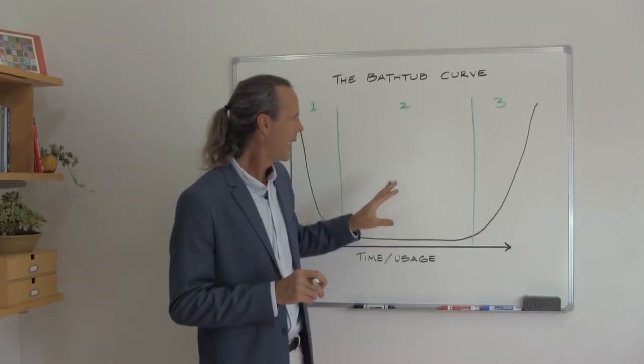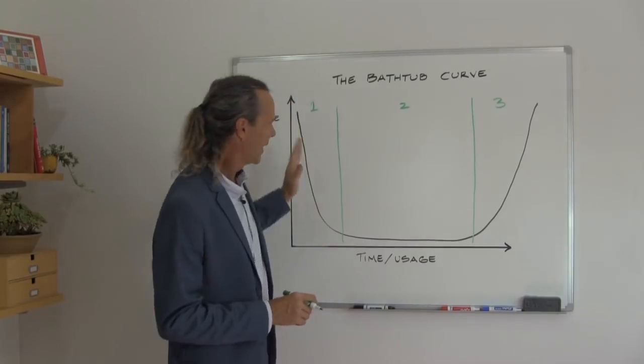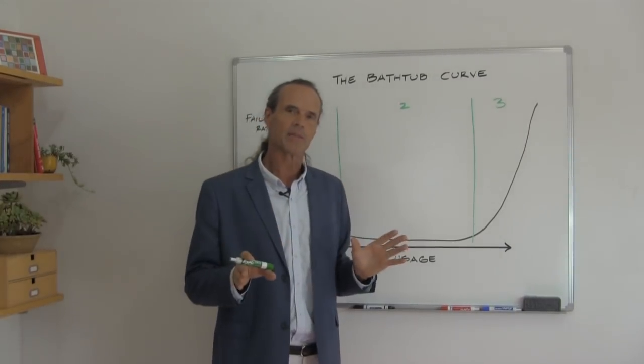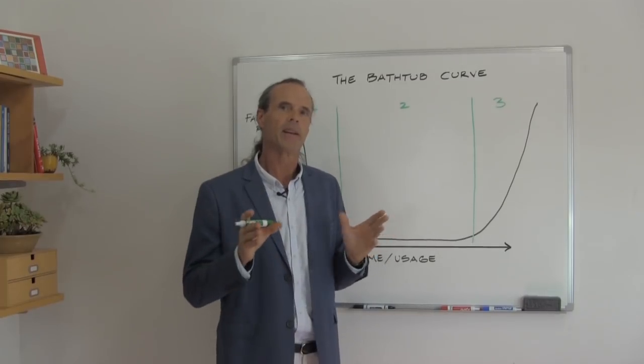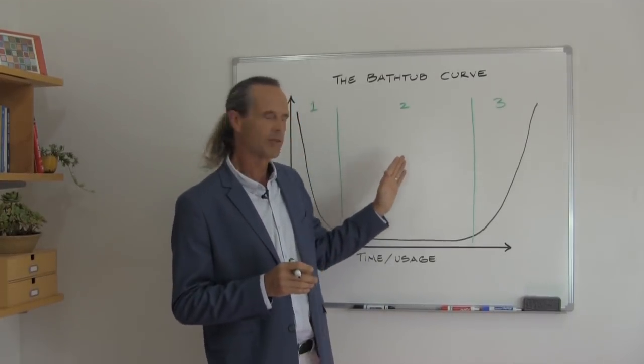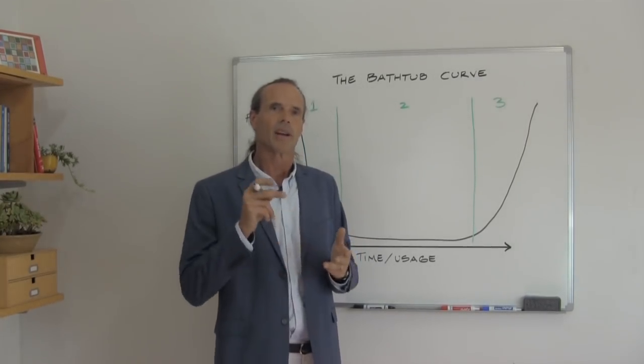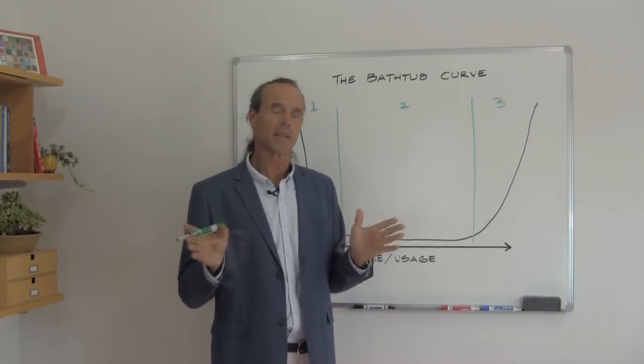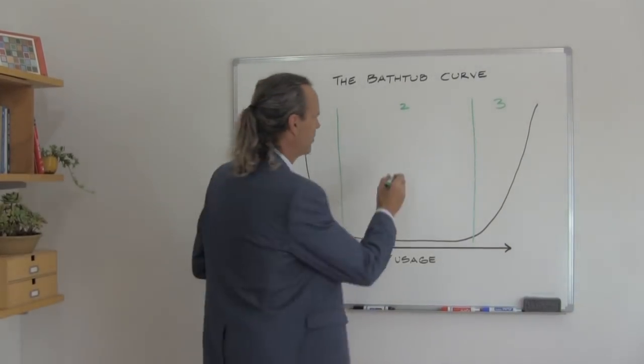So the very interesting thing about the bathtub curve is that it works for anything that's manufactured. It's an engineering illustration to show the lifespan of any product. Now this is good for computers, refrigerators, toasters, cars, and something as simple as a light bulb.